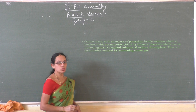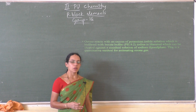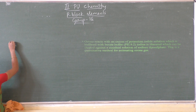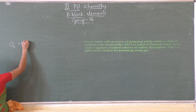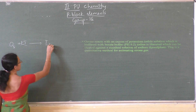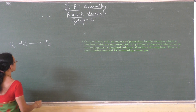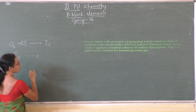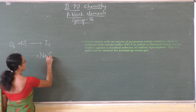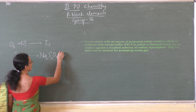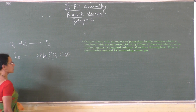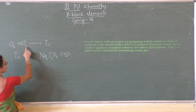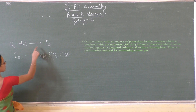Next, ozone reacts with excess of potassium iodide. When ozone reacts with potassium iodide it liberates iodine. That liberated iodine is titrated against hypo solution or sodium thiosulfate solution Na2S2O3·5H2O.